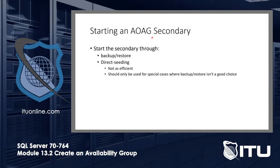To get the secondary up to speed, you have two options. You can do a backup and restore of the database and log, or — if the database isn't too large — you can use direct seeding, which bypasses backup and restore and simply starts copying from the beginning. If the database is small and your network is high-speed, direct seeding can work, but it's less efficient and should only be used in special cases where backup and restore isn't a good choice.